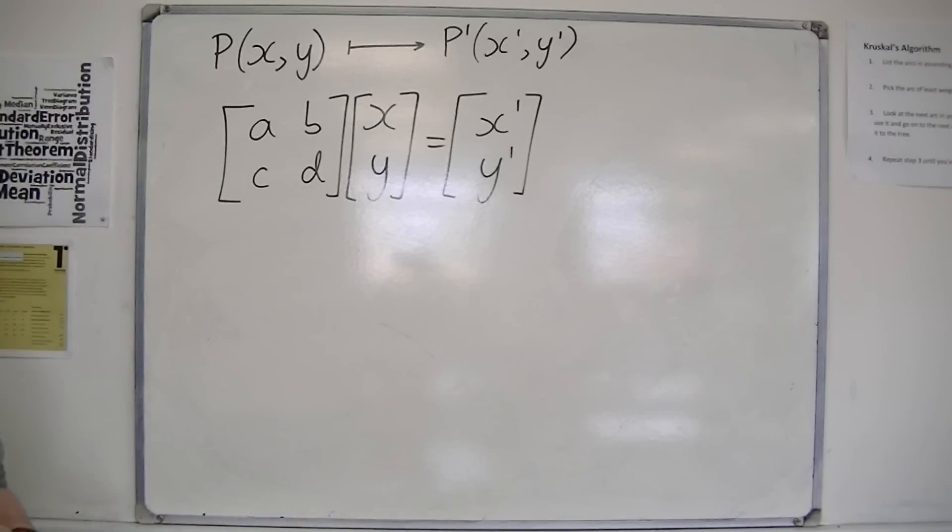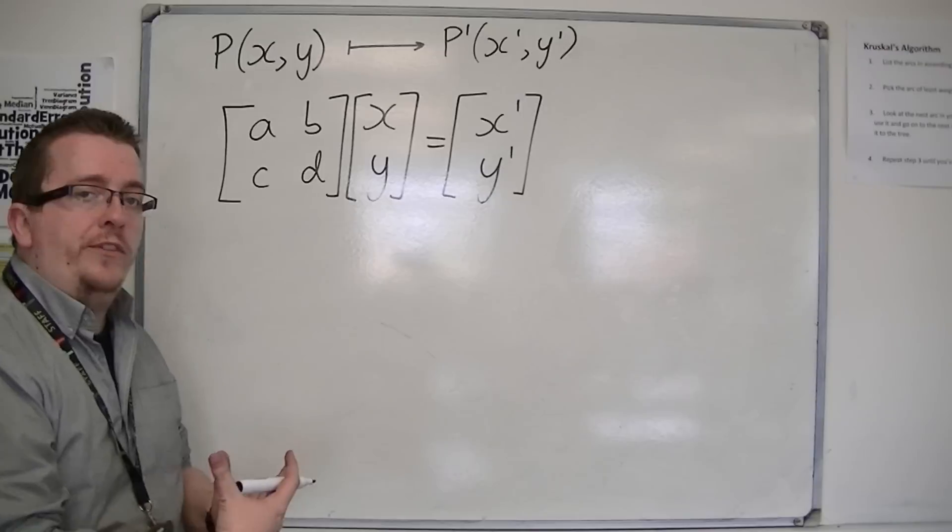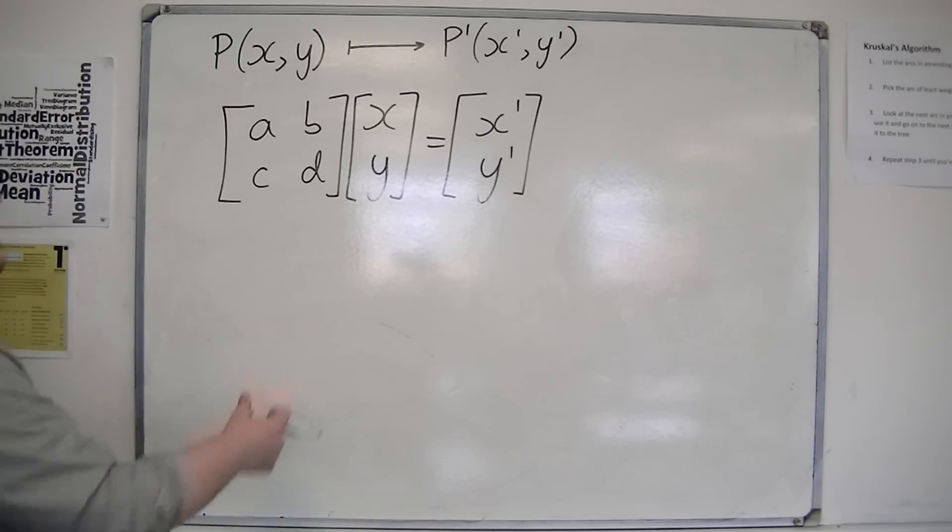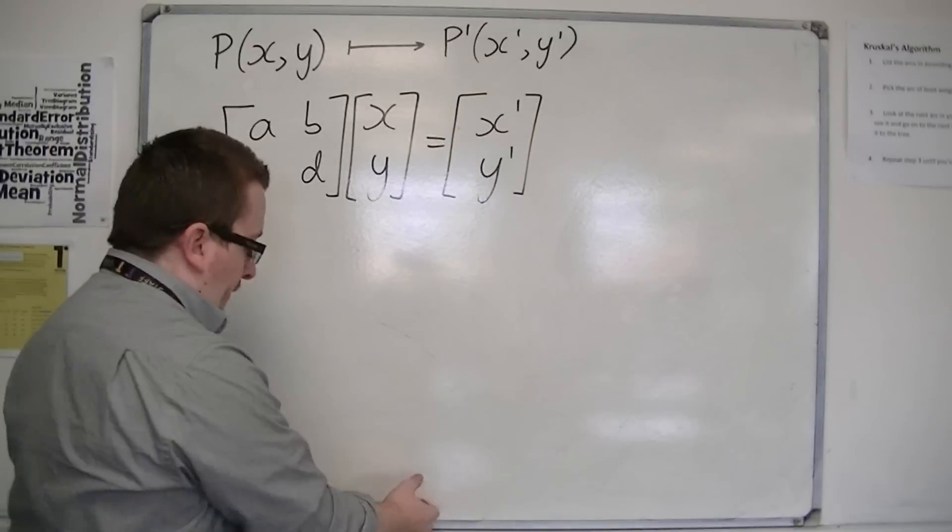And so this is how you can see a matrix as a linear transformation, mapping a set of coordinates onto another set of coordinates.